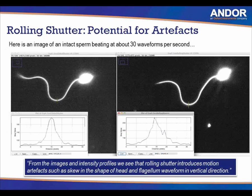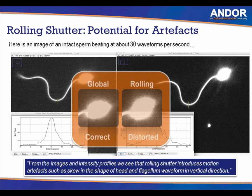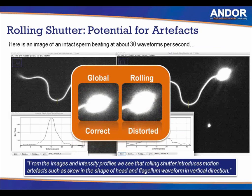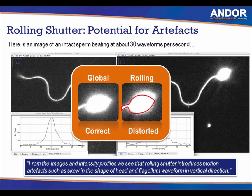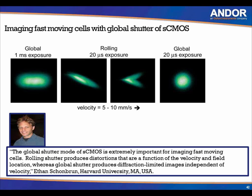Another example shows where rolling shutter produces artifacts: an image of an intact sperm beating at 30 waveforms per second. In global shutter you see the correct shape, whereas in rolling shutter there is significant distortion because the sample is moving faster than the rolling shutter is moving across the sensor. Similarly, cells being pushed through a microfluidic chamber at 5–10 millimeters per second show distortion of cell shape with rolling shutter, requiring global shutter to prevent distortion. Blood cells moving through the eye imaged with adaptive optics also showed significant warping with rolling shutter, requiring a move to global shutter.